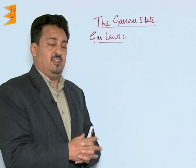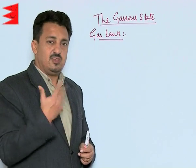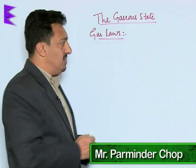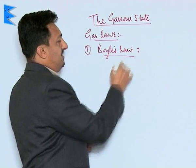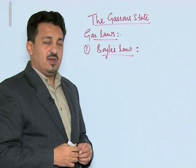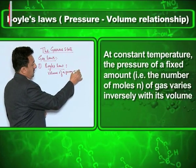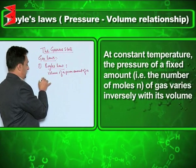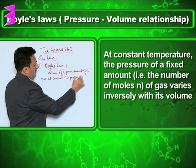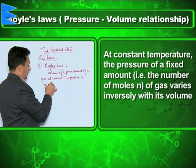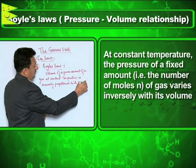The gas laws are laws which have been given after doing a number of experimentations and observing certain very specific properties, which have been given the shape of a law. The first one is Boyle's Law, given way back in 1662 by Robert Boyle, who observed that the volume of a given amount of a gas at constant temperature is inversely proportional to its pressure.